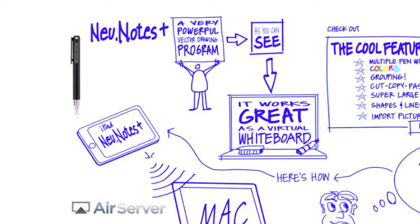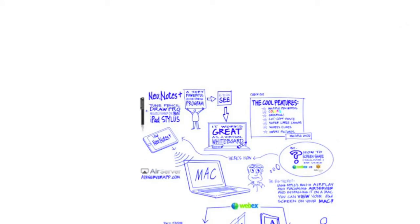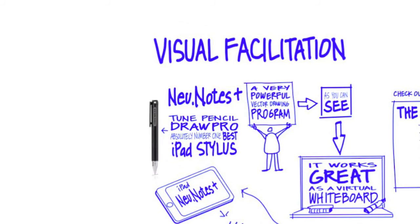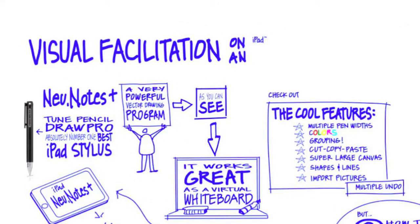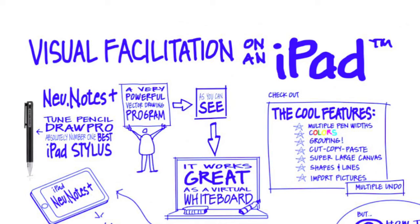Another thing I might mention is this great new stylus for the iPad — I've used them all and this thing is incredible. It's called the Tune Pencil Draw Pro. It's got a little clear disk so it's extremely accurate, with an actual point on the actual tip of the stylus. It's amazing how accurate you can draw on iPad. I highly recommend considering buying one. I've had them all — the Wacom ones, the Pogo stick one — and this by far is the best.